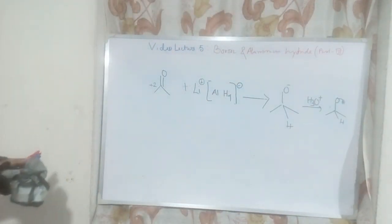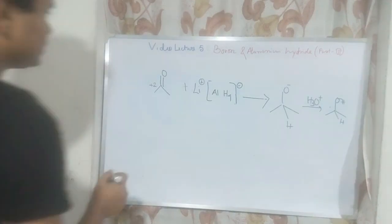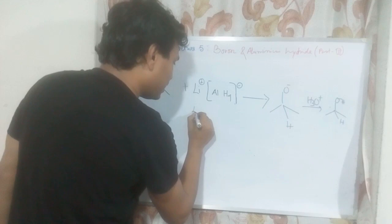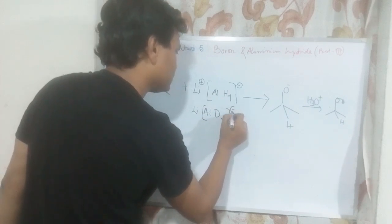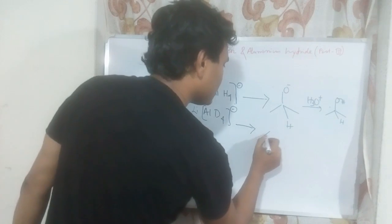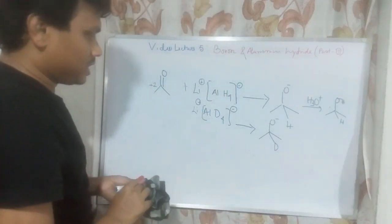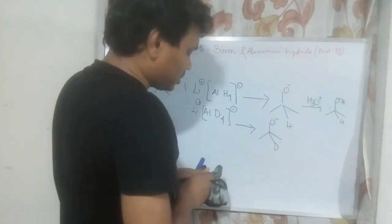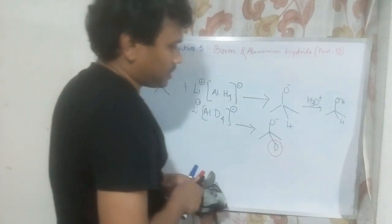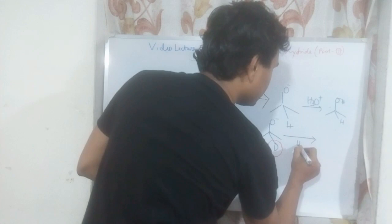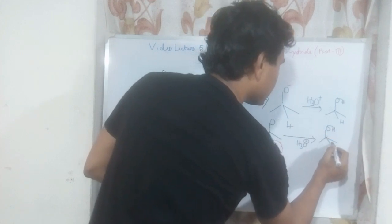This question could be made more complicated or tricky by changing the reagents. For example, if we take lithium aluminium deuteride (LiAlD4), the product in the first stage will be O⁻ with D attached. So deuterium will come at the carbon centre, and when this molecule reacts with H3O⁺ workup, it produces an OHD product.